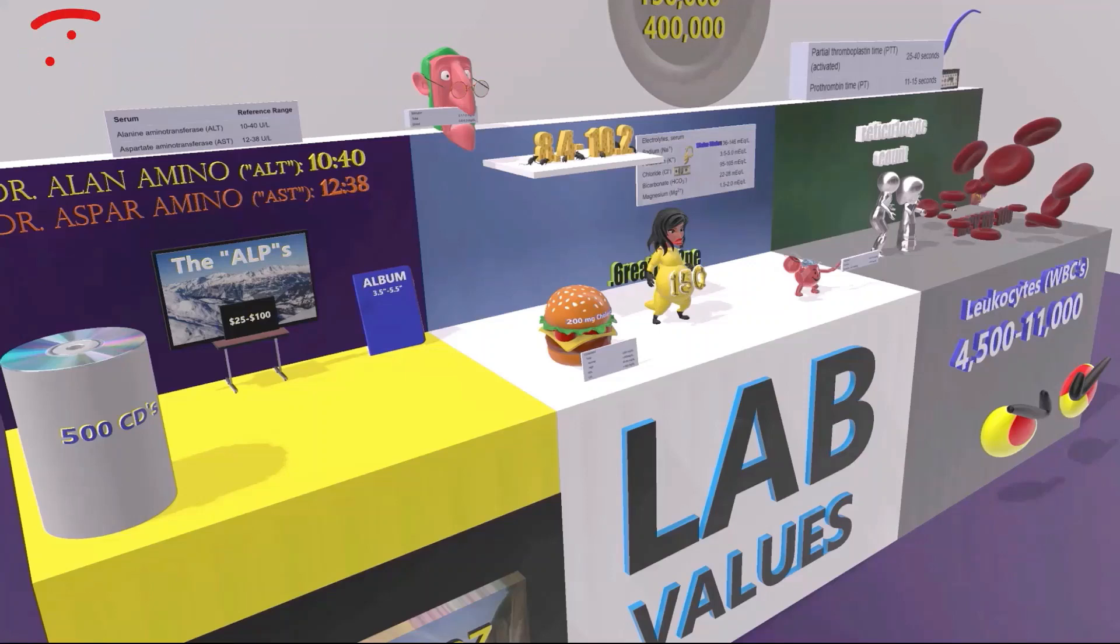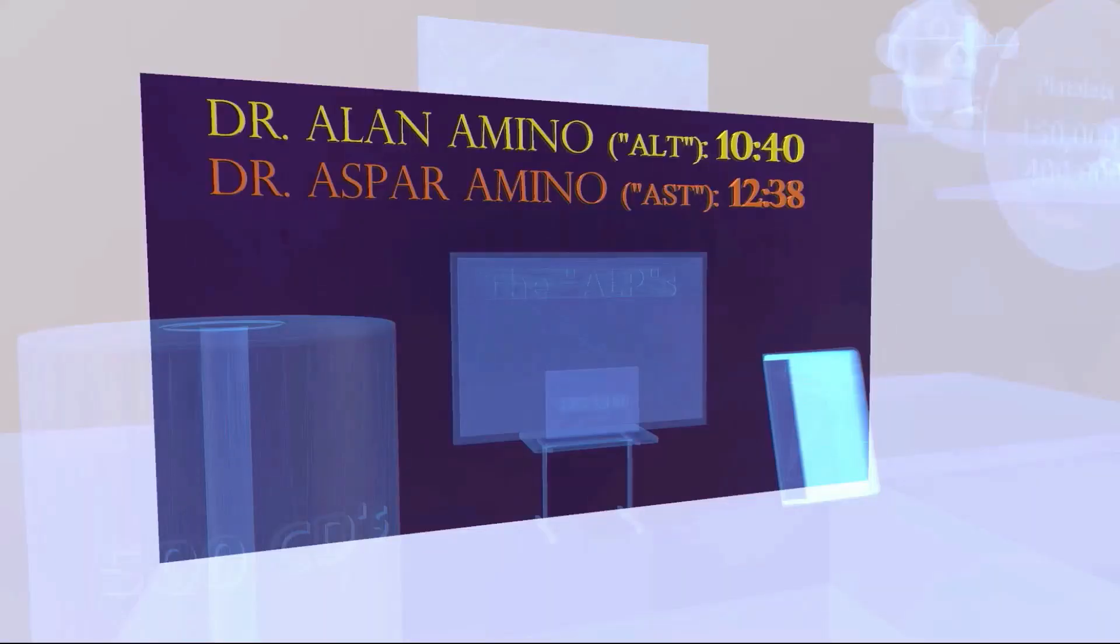So let's begin. Our scene takes place at this laboratory which belongs to Dr. Alan Amino and Dr. Aspar Amino. Don't worry too much about these names, let's focus on what they represent.